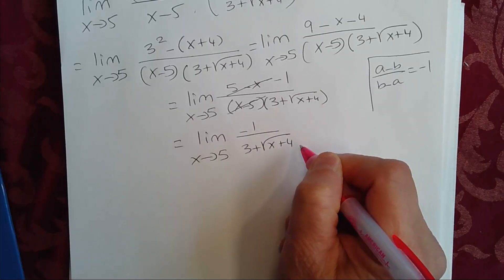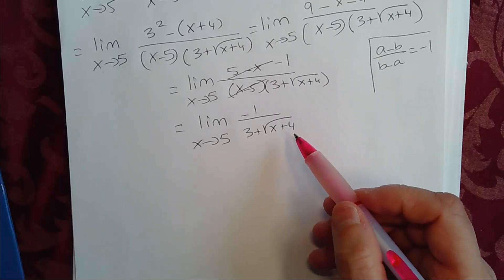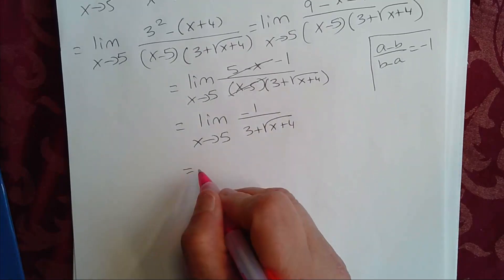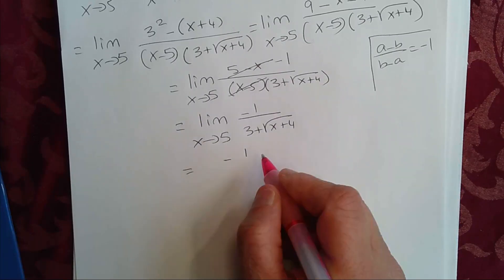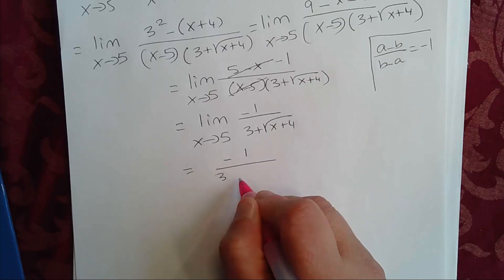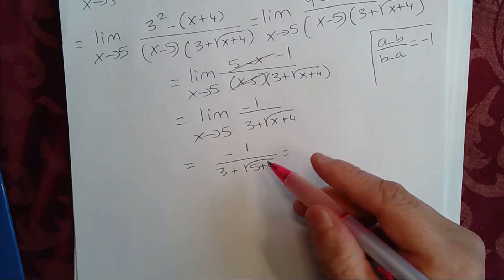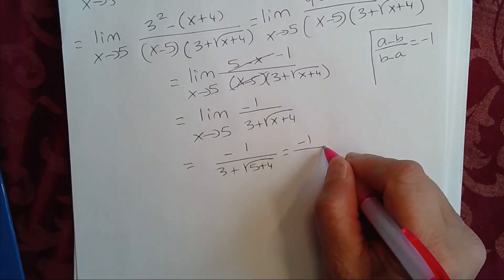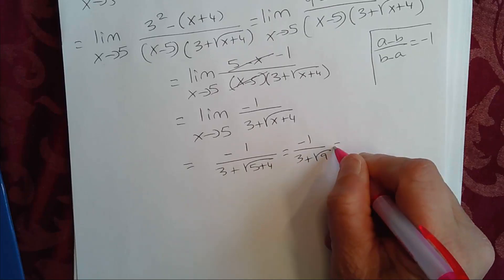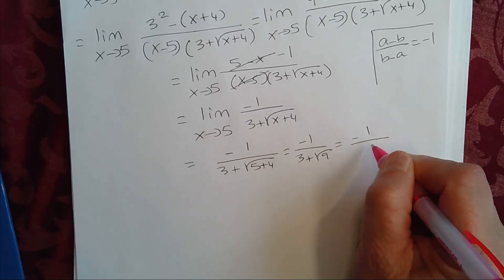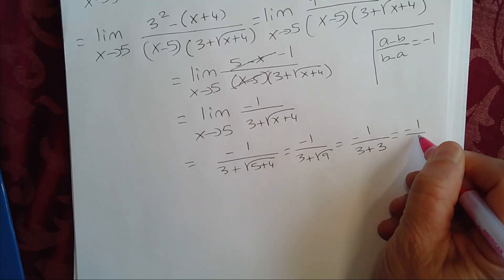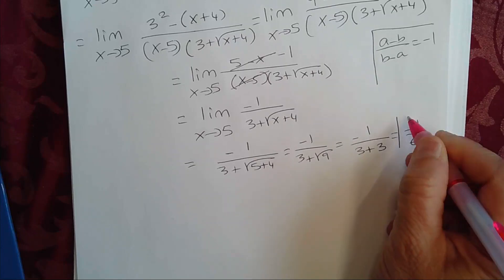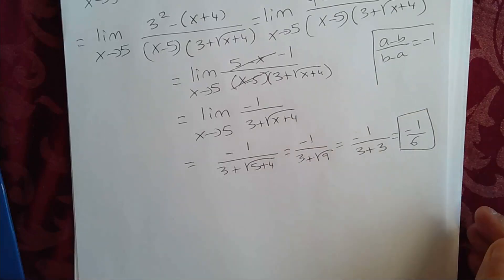So now what we can do, we can replace x with 5. Now we can use direct substitution. You have negative 1 divided by 3 plus 5 plus 4. 5 plus 4 is 9, square root of 9 is 3. Negative 1 divided by 3 plus 3, which is negative 1 over 6. So that's the limit. The limit is negative 1 over 6.